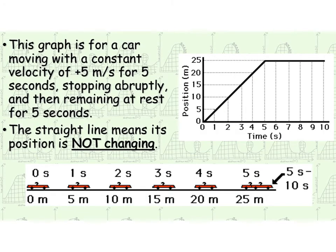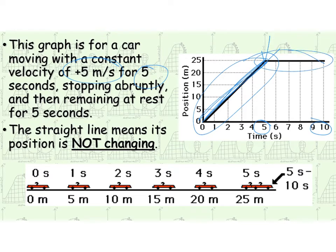All right, so this is exactly what we were just talking about, same idea. Straight line means that our velocity is constant. So we have uniform motion. And we're going at the slope of, here this is 5 meters per second. So we're going at a velocity of 5 meters per second for a total of 5 seconds. Then there is an abrupt stop, and we remain at rest for the next 10 seconds.